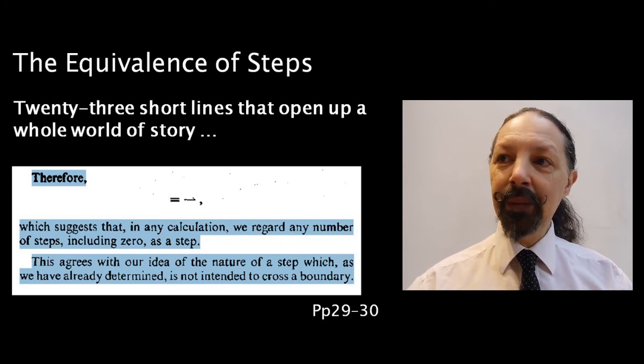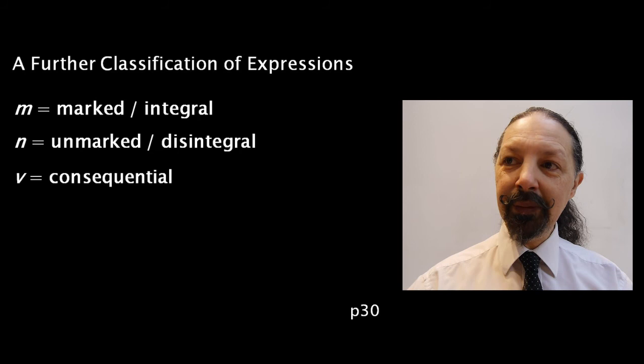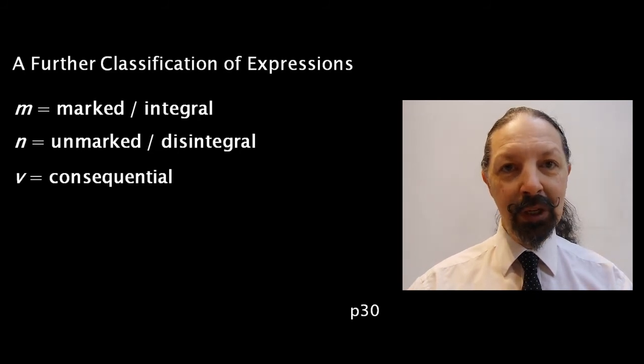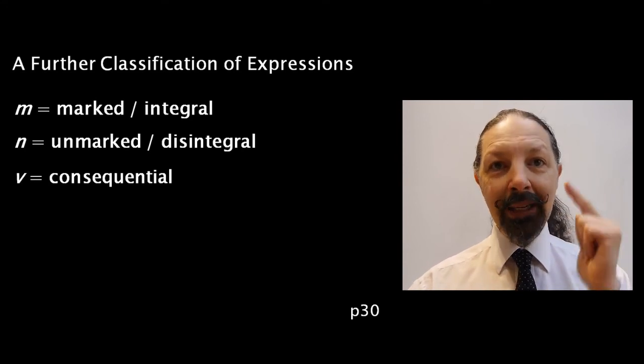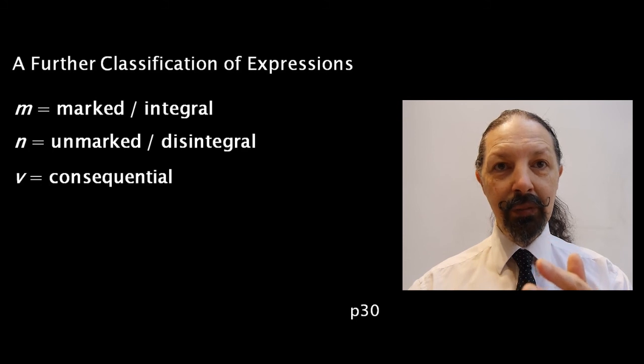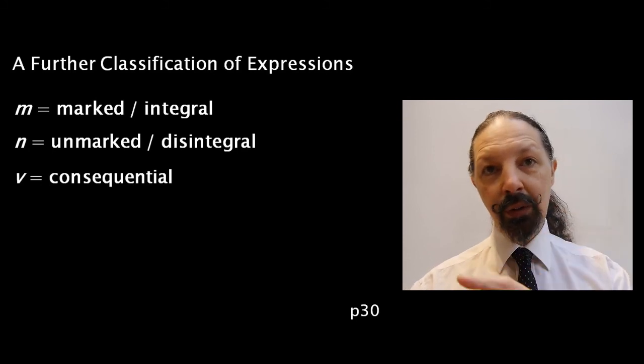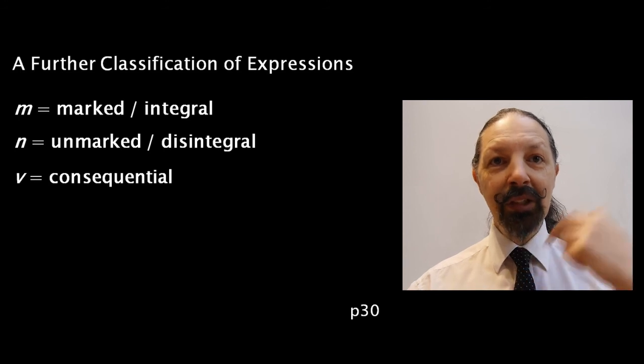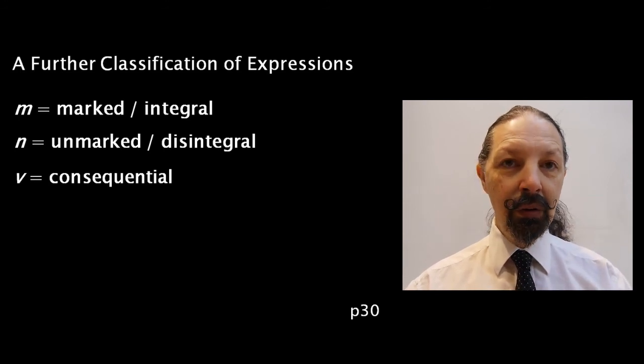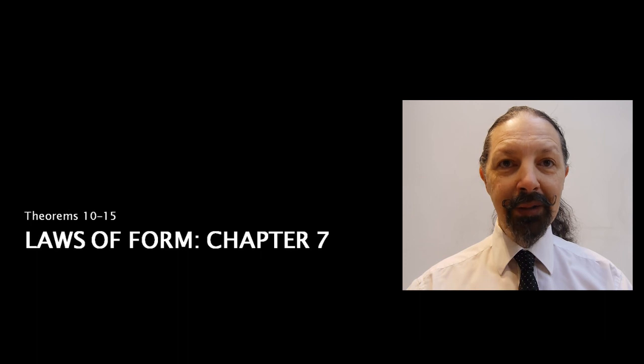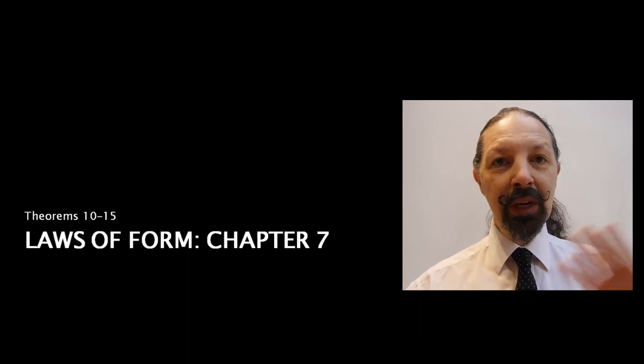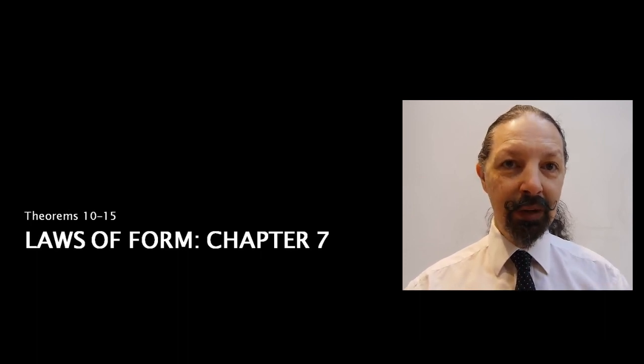And that brings us to the end of the chapter in which he talks about three types of expressions: the marked, the unmarked, and the consequential that could be marked or not marked depending on the value. And this will bring us into a whole new application of the calculus in the next session which is going to be about theorems 10 to 15, which create a bridge into the equations of the second order. I look forward to seeing you then!